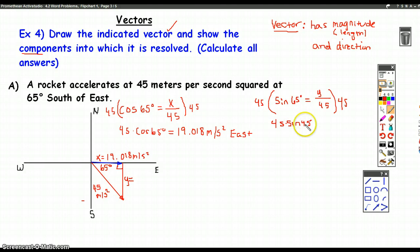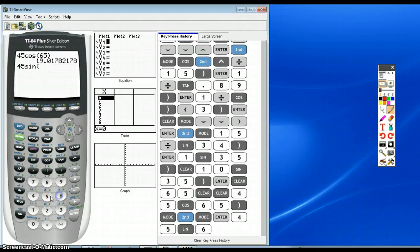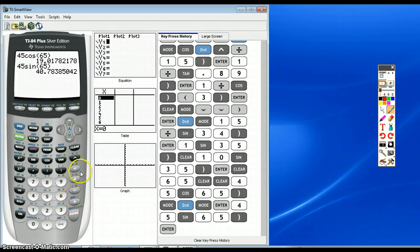45 times the sine of 45. My s's and phi's look exactly the same. I'll have to work on that. So that's y, we put that in the calculator. 45 sine 65.